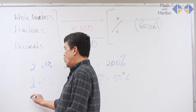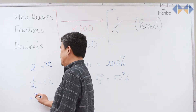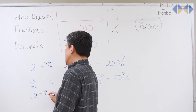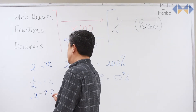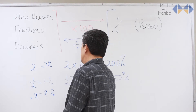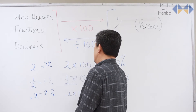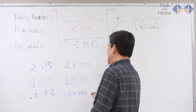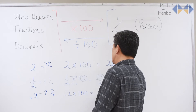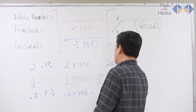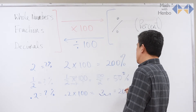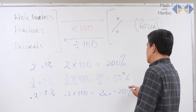But if I get point two, what is that as a percent? The answer, of course, is point two times one hundred — move two places to the right — equals twenty percent.